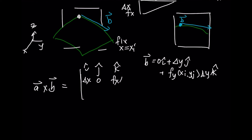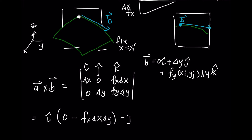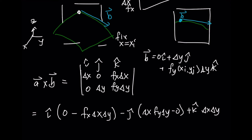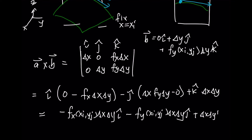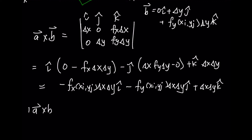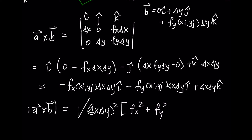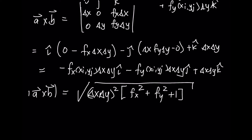The two vectors are: a = (delta x, 0, fx · delta x) and b = (0, delta y, fy · delta y). Taking the cross product produces: fx(xi, yj) · delta x · delta y in the i direction, negative fy(xi, yj) · delta x · delta y in the j direction, and delta x · delta y in the k direction. The length of this cross product gives the area of the parallelogram approximation. Each term has a common factor of delta x · delta y, so we get delta x · delta y times the square root of fx² + fy² + 1, all evaluated at xi, yj.